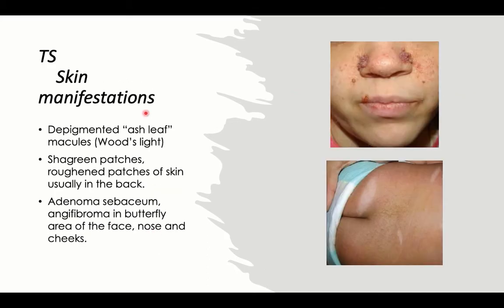The skin manifestations of tuberous sclerosis include, first, the depigmented or ash leaf macules — depigmented macules called ash leaf because they take the shape of an ash leaf. Wood's light can differentiate these lesions from other skin lesions, which is very important. Wood's light is one of the workup investigations for a child with developmental delay.